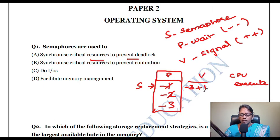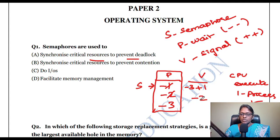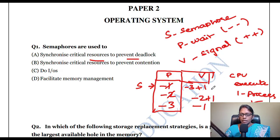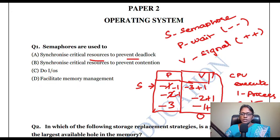After one process executes, the semaphore value becomes minus two — only two processes are waiting in the queue. One more process executes: minus two plus one equals minus one. Then the last process executes: minus one plus one equals zero. After all three processes execute, the semaphore value is zero.